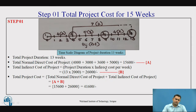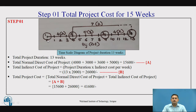This is the first step, showing the time scale diagram of the normal network. The non-scale network diagram is now represented by a scalar representation called a time scale diagram. We take the critical path as a baseline, and other activities are represented above and below the baseline. The overall total project duration is 13 weeks, and the total normal direct cost is the summation of all normal costs of the activities.